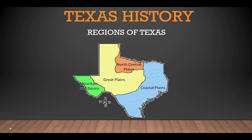The next lesson we are going to look at, keeping with our topic of Texas history, is regions of Texas. This is competency three. If you go to the October 1st section, there is a list of subsections of Texas history to help you study. It's not up there yet, but it will eventually be there.